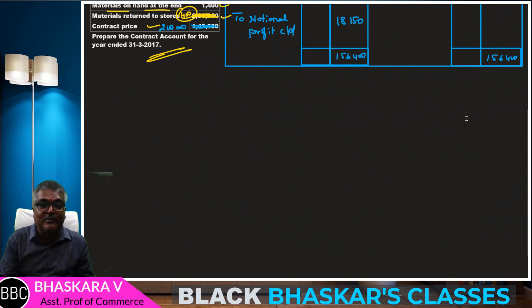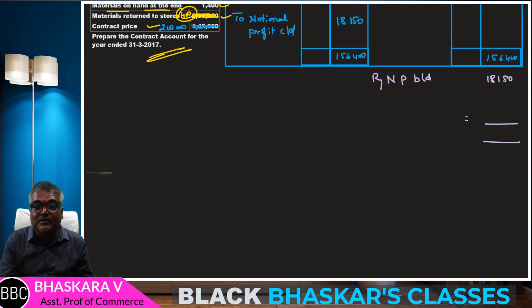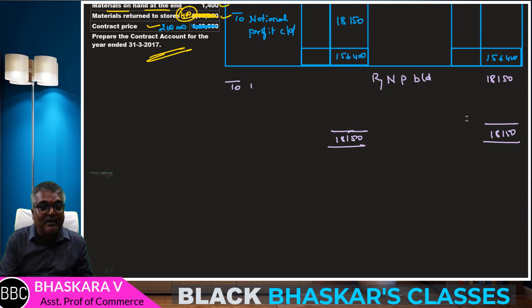Notional profit carried down. Then on the credit side, by notional profit brought down: 17,400 plus 1,500 — wait, students, total is 18,750.